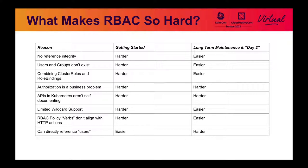The first issue is no referential integrity. If you create an RBAC policy that references other objects and those objects don't exist, Kubernetes isn't going to tell you. So that can make debugging a little bit difficult. Users and groups don't exist as first-class objects. Service accounts exist and have some static groups, but in general you can't just define an object called a group and add members to it. You can't define a user object, at least in upstream Kubernetes — OpenShift is a little bit different.